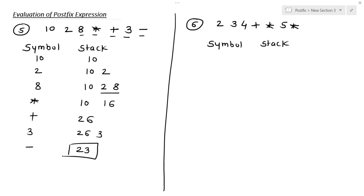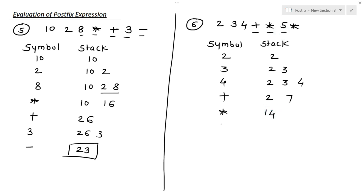Let's see another example: 2 3 4 plus multiplication 5 multiplication. The first symbol is 2, second is 3, third is 4 — all go into the stack. The next symbol is the plus operator; at the top of the stack are 4 and 3, so 3 plus 4 equals 7. Then multiplication: we have 2 and 7 in the stack, so 2 multiplied by 7 equals 14. The next symbol is 5; in the stack we have 14 and 5. The last symbol is multiplication: 14 multiplied by 5 equals 70. This is our answer for this postfix expression.